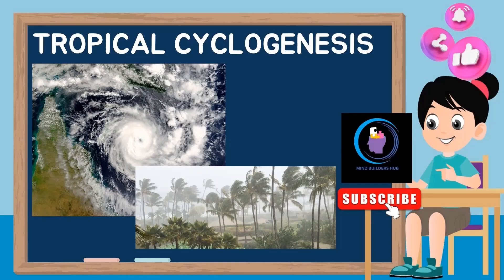Remember that Tropical Cyclogenesis is the process by which tropical cyclones, also known as hurricanes or typhoons in different parts of the world, form. These intense weather systems are characterized by strong winds, heavy rainfall, and low pressure centers.